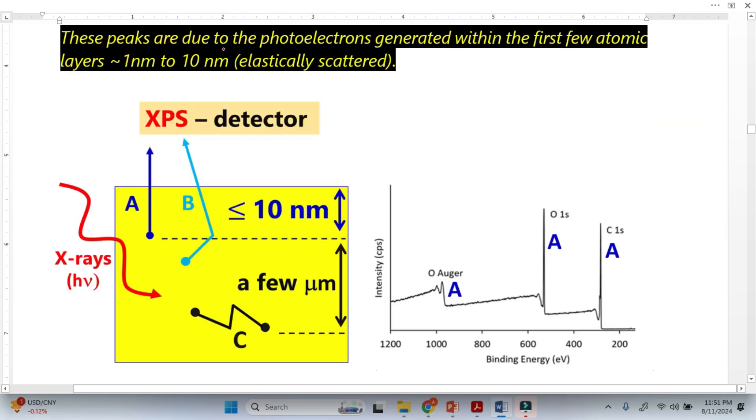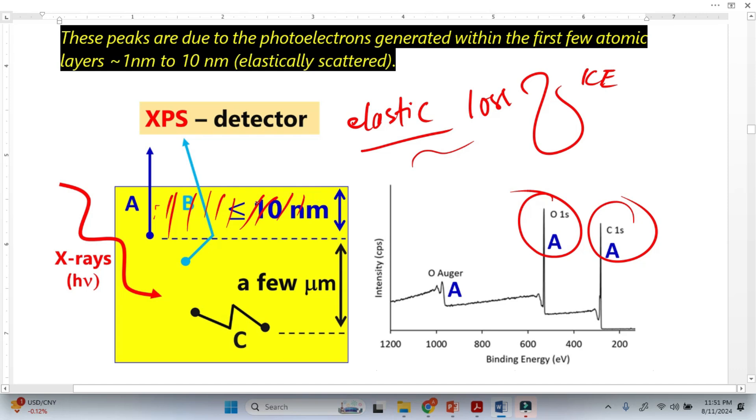These photoelectron peaks basically generated from a very thin region here, about 10 nanometers. This is the region basically where the electron basically does not make inelastic collision. Here the electron basically makes elastic collision, and we know that in elastic collision there is no loss of kinetic energy. So this means that these electrons 100 percent reach the detector and we get the photoelectron peaks. These are basically from this thin region, less than 10 nanometer region.